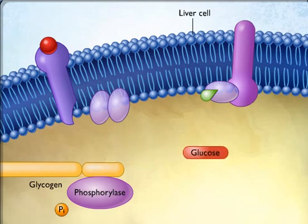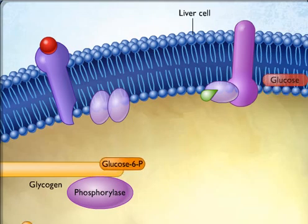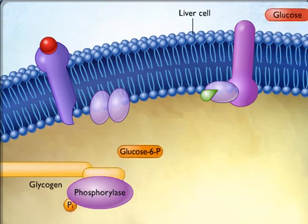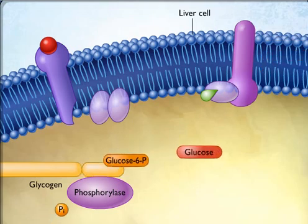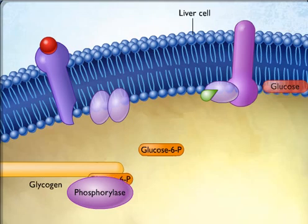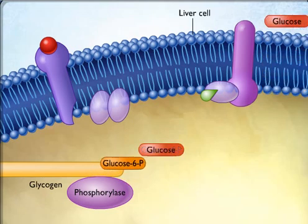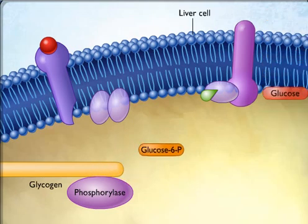Through this multi-step mechanism, epinephrine causes the liver to secrete glucose into the blood during the fight-or-flight reaction.